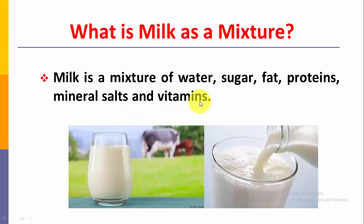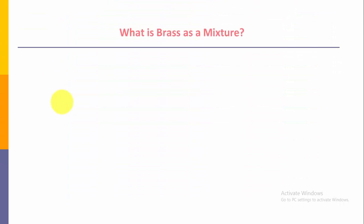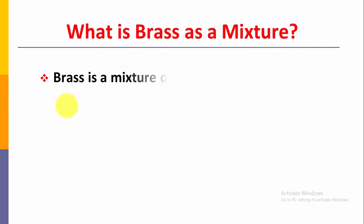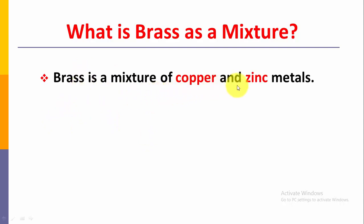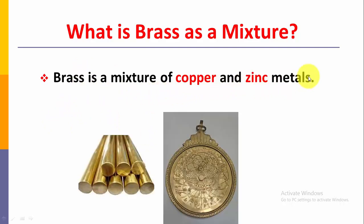Dear students, the components of a mixture retain their properties — their properties are shown in the mixture. So brass is a mixture of copper and zinc. Copper is a metal and zinc is also a metal. So both metals, copper and zinc, combine to form brass.